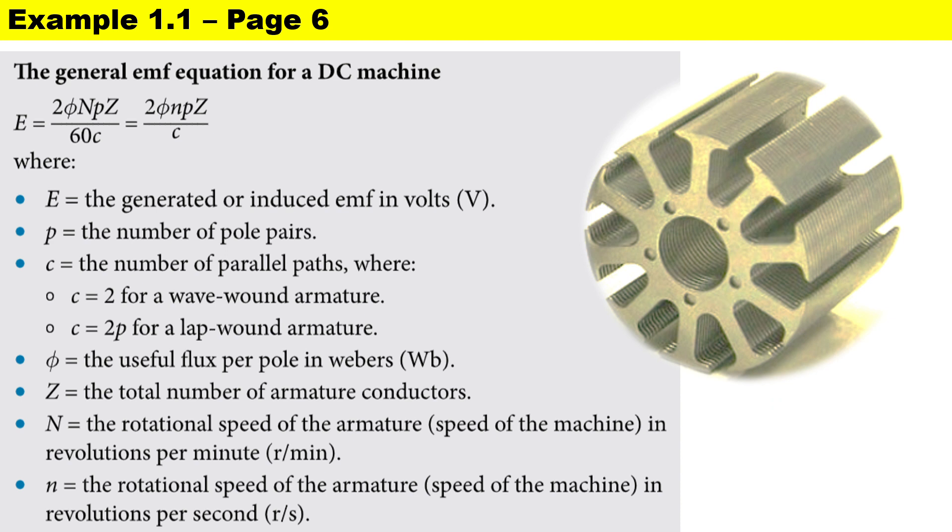Small letter p is the number of pole pairs. c is the number of parallel paths. If it's wave wound, c equals 2. If it's lap wound, c equals 2 times small letter p.